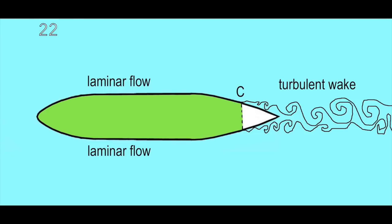What does it mean? Before this line C, the flow lines remain parallel to the wall. We say that the flow is laminar. After that line, those flow lines are no longer parallel to the wall. The flow becomes turbulent and we get a turbulent wake, which is the source of noise.